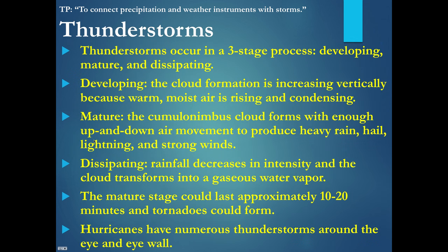Thunderstorms occur in a three-stage process: developing, mature, and dissipating. In the developing stage, cloud formation is increasing — warm, moist air rises because of low density, cools as it expands, meets the dew point temperature, and you have a lot of cloud formation. Eventually it develops into a large, vertical cloud called a thunderhead.